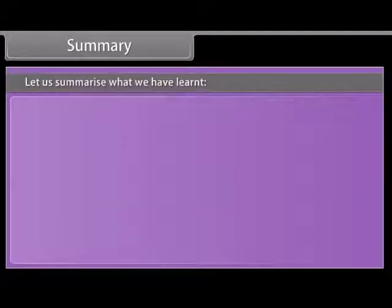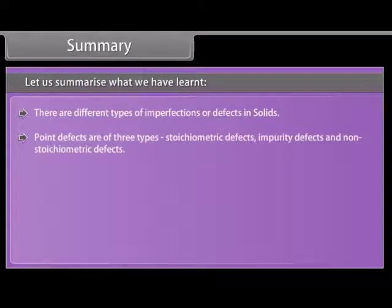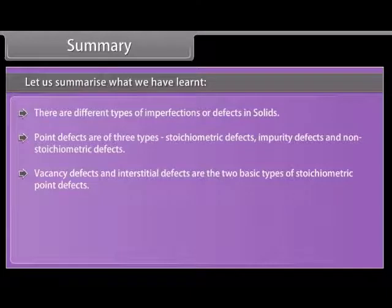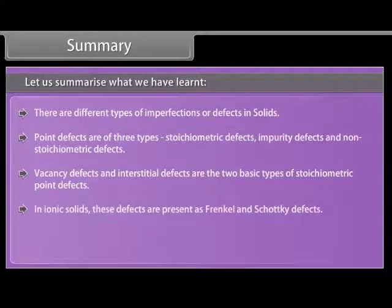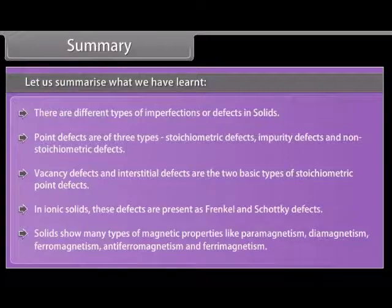Let us summarize what we have learned. There are different types of imperfections or defects in solids. Point defects are of three types: stoichiometric defects, impurity defects, and non-stoichiometric defects. Vacancy defects and interstitial defects are the two basic types of stoichiometric point defects. In ionic solids, these defects are present as Frenkel and Schottky defects. Solids show many types of magnetic properties like paramagnetism, diamagnetism, ferromagnetism, antiferromagnetism, and ferrimagnetism.